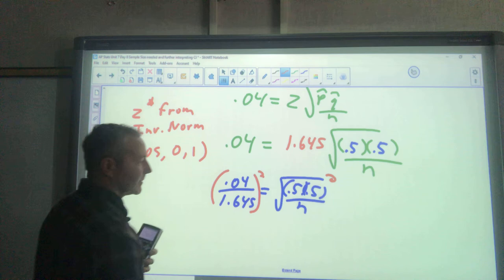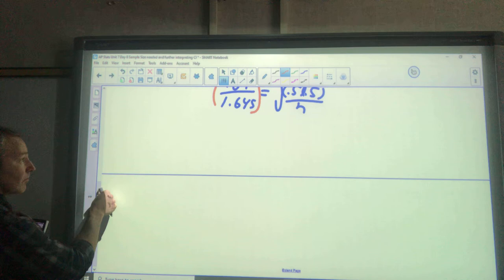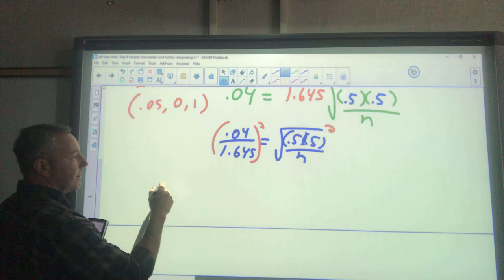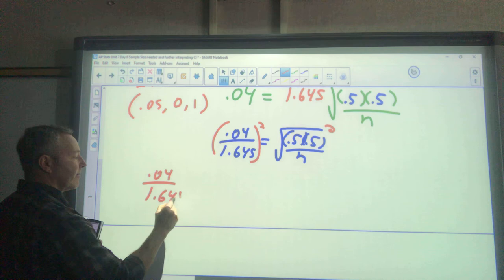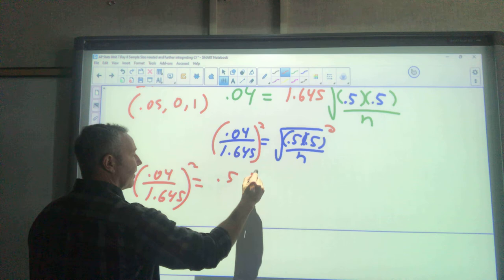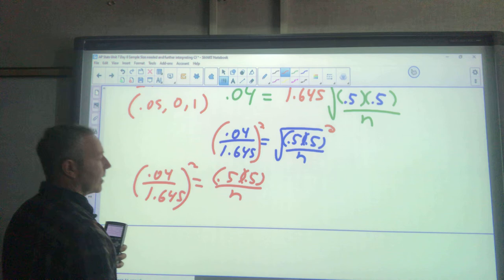Square the whole thing—that undoes my square root. 0.04 divided by 1.645 squared equals 0.5 times 0.5, which is actually 0.25, over n. I've squared that.